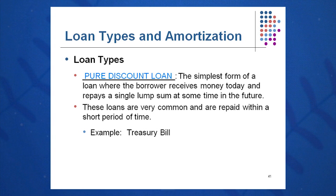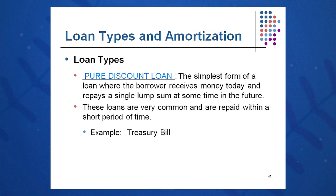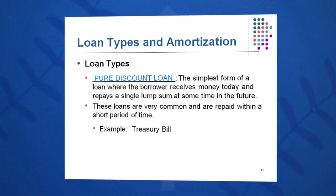A pure discount loan is a very simple form: you receive money today and you repay a single lump sum at some time in the future. Very common and usually within a short period of time. For example, when you buy a treasury bill, the government receives your money today and repays you a lump sum at some time in the future.